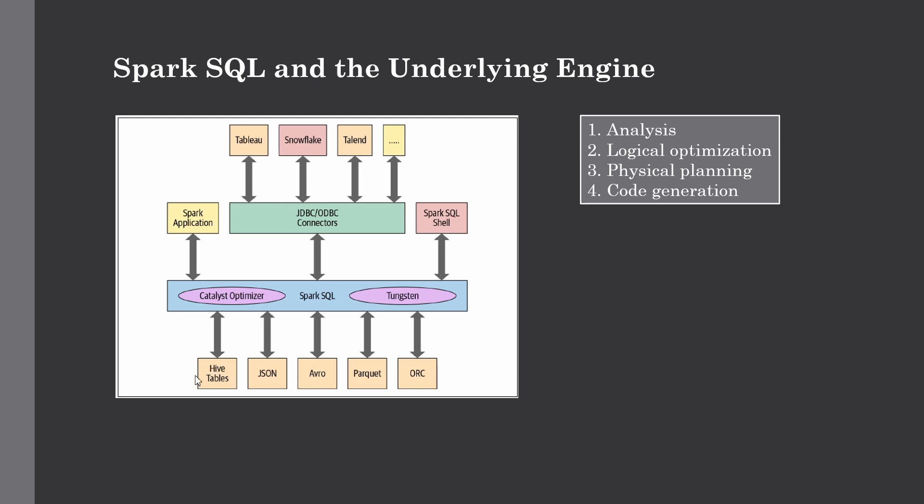As you can see in this figure, we have Spark SQL which is built on top of Catalyst optimizer and Tungsten. They have several functionalities. You can work with Hive tables, different data formats like Avro, Parquet, or JSON, write your Spark application, use the Spark SQL shell for quicker analysis, and integrate Spark SQL with different technologies like Talend, Snowflake, Tableau, etc. through JDBC/ODBC connectors.